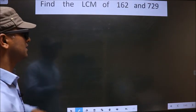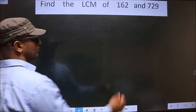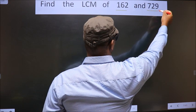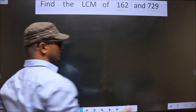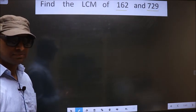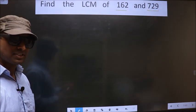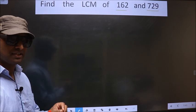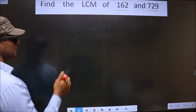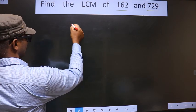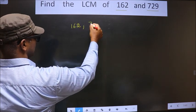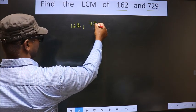Find the LCM of 162 and 729. To find the LCM, first we should frame it in this way. We write 162 and 729.